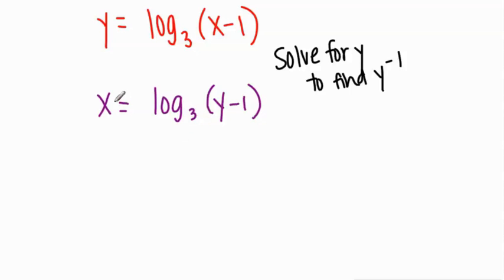To solve for y, I'm going to need to put this into exponential form. So I have 3 to the x equals y minus 1. To solve for y, I add 1 to both sides. And that would be our inverse function.